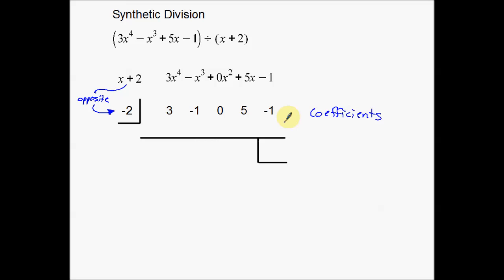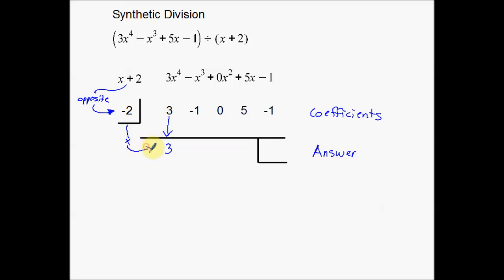That's the setup. Now we get into the actual synthetic division process. We start on the left with the first coefficient. I take this 3 and bring it down — the numbers I get in this bottom row are going to be part of my answer. Then I take the number inside the box, negative 2, and multiply it times the number I brought down: negative 2 times 3 gives negative 6. That negative 6 goes up in the gap.